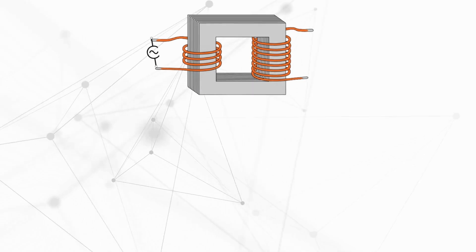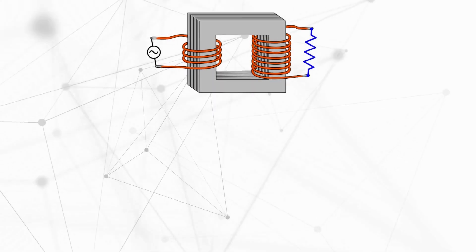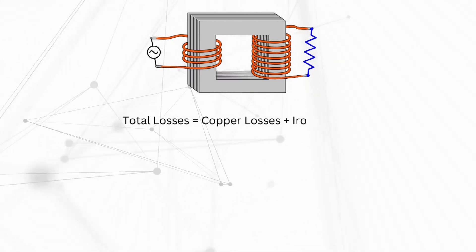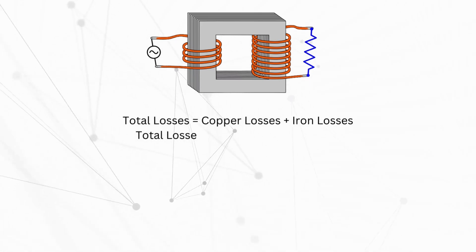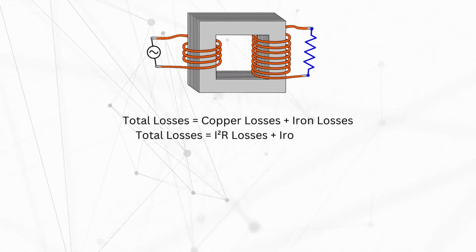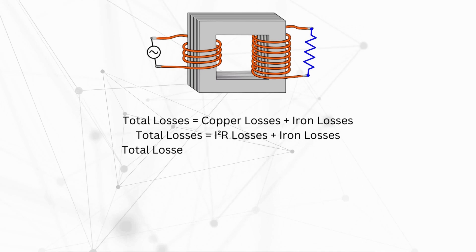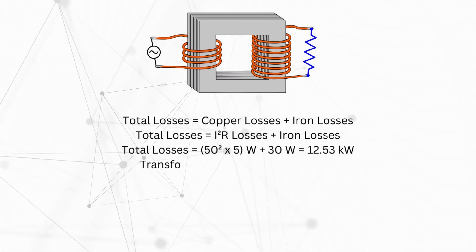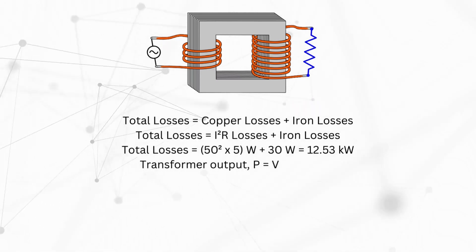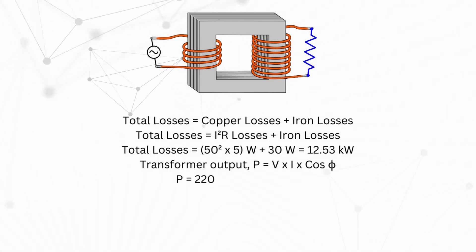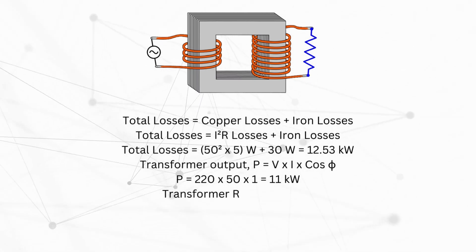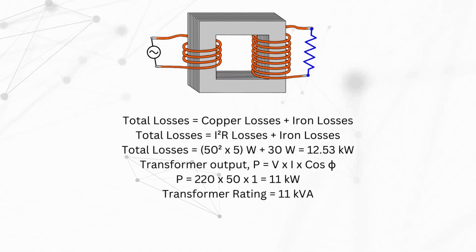In the first scenario, if we connect a resistive load to the secondary of the transformer at unity power factor, then total losses of the transformer would be copper losses plus iron losses — that is I²R losses plus iron losses. Putting in the values, it becomes 12.53 kW, and the transformer output will be P = V × I × cos φ, which by putting in the values becomes 11 kW, while the transformer rating is 11 kVA.